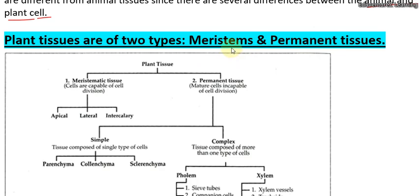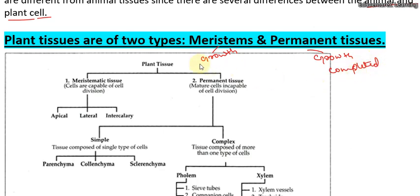Meristematic tissues are growth-related tissues because they help the plant to grow. Permanent tissues are tissues where growth is completely finished. So plant tissues are divided into two parts: meristematic tissues and permanent tissues.